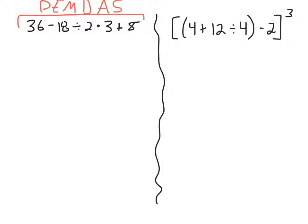To evaluate the numerical expression, we'd think about PEMDAS. Are there any parentheses? There are not. Are there any exponents? There are not. So I'm done with the P and E in PEMDAS. Are there any multiplications or divisions? There are, and we do them from left to right. Looking at our expression, we see 18 divided by 2 times 3. Division and multiplication come before subtraction and addition, so I do this part first. Even though M comes before D in PEMDAS, you do them left to right — so division comes first here. 18 divided by 2 is 9. I'll rewrite the whole problem: 36 minus 9 times 3 plus 8.